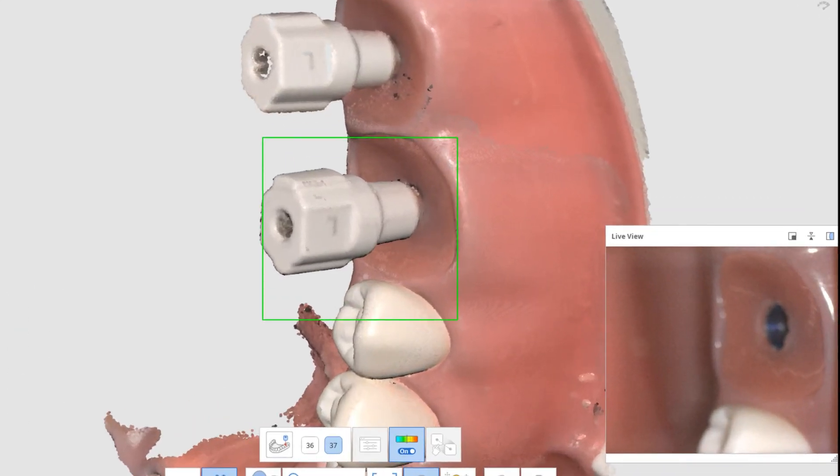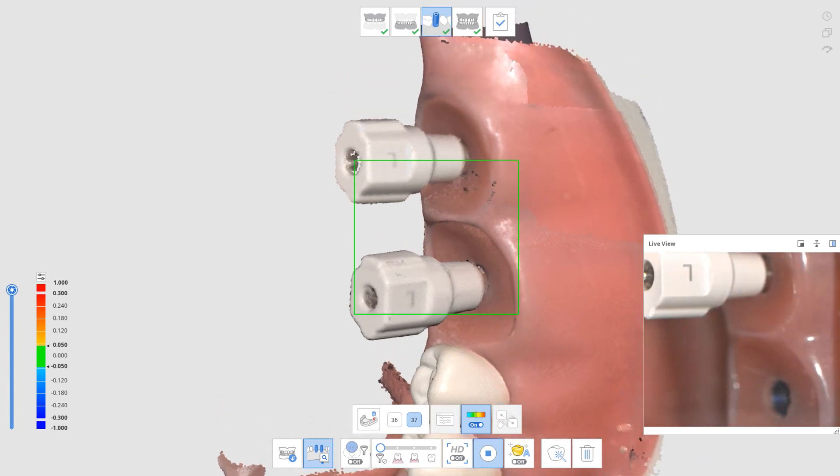As you can see, while number 37 is getting scanned, it doesn't affect the number 36 ScanBody.